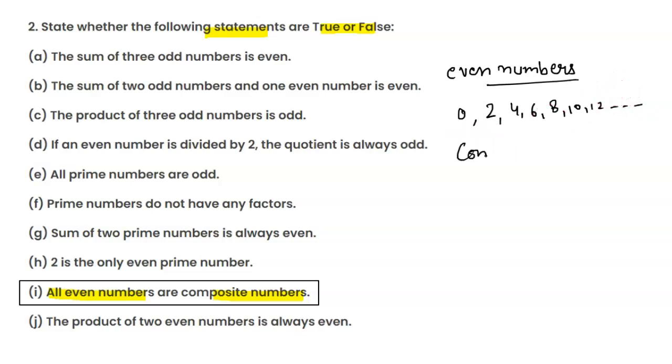Next, composite numbers. Composite numbers are numbers which have more than 2 factors. For example, if I take 4 here, how many factors are there? 2, 1, and 4. These are 3 factors. So, 4 is a composite number.